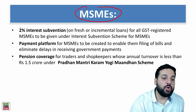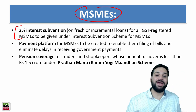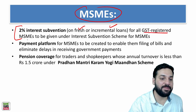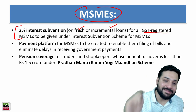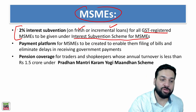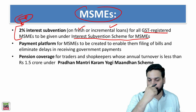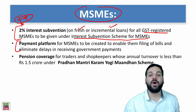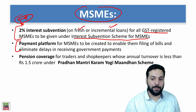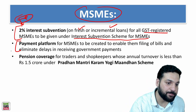For MSMEs, a 2 percent interest subvention — that is, 2 percent rebate on interest on fresh or incremental loans — will be provided for all GST-registered MSMEs. This is really important. Additionally, a payment platform is being created for MSMEs working on government tenders, allowing them to file bills online and receive payments online.